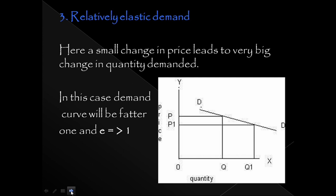The third type is relatively elastic demand. Here, a small change in price leads to a very big change in quantity demanded. For example, if P changes slightly from P1, the quantity demanded changes significantly from Q1 to Q3. A small change in price leads to a very big change in demand. E is greater than 1.